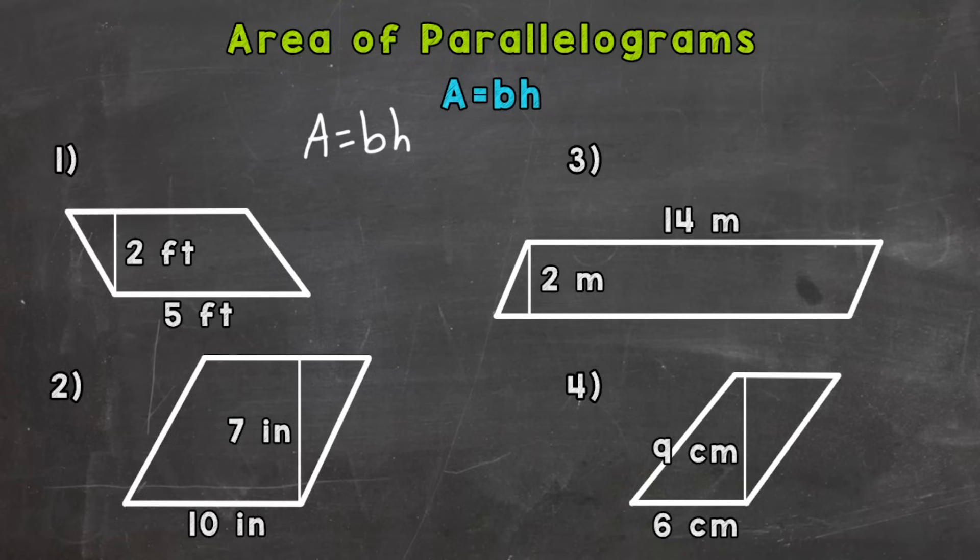So again, the formula is area equals base times height. So our base is this five feet here. So plug in the five for the base times this height of two feet. Now that line in the parallelogram there is not part of that shape. It's just there to represent that height of two feet.